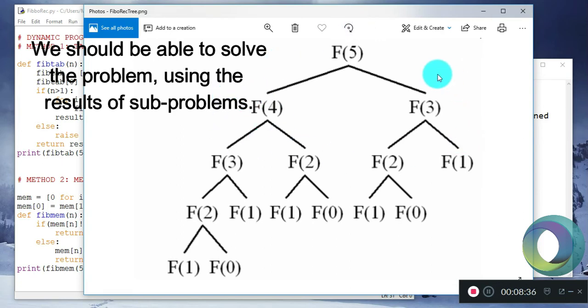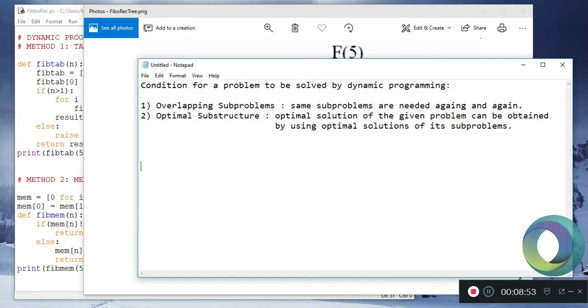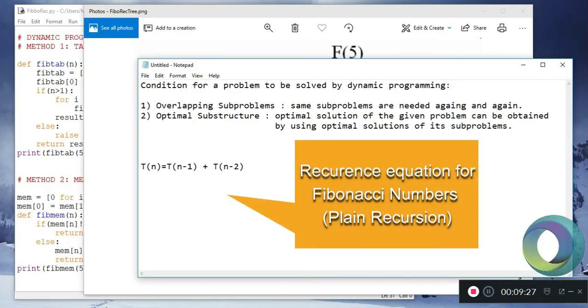Now you might wonder, now that we know dynamic programming is better, let's compare their complexities. The recurrence equation for Fibonacci numbers: what this means is the number of steps required for n is equal to the sum of the number of steps required for n-1 and n-2.